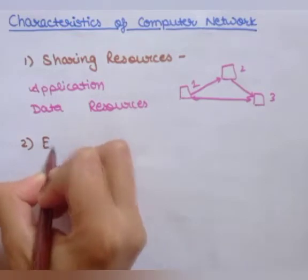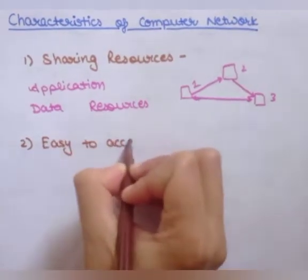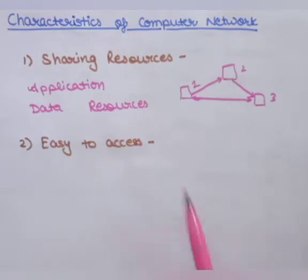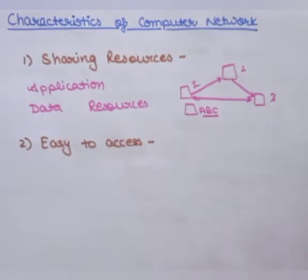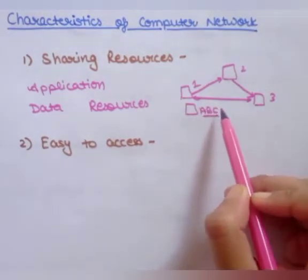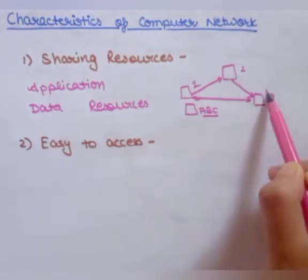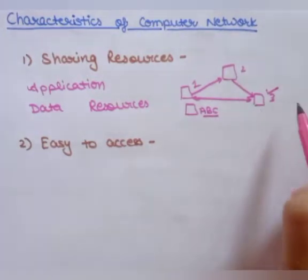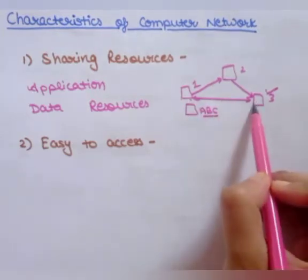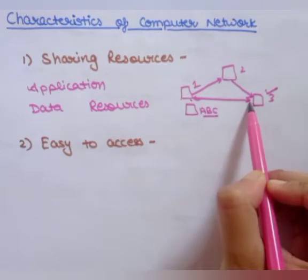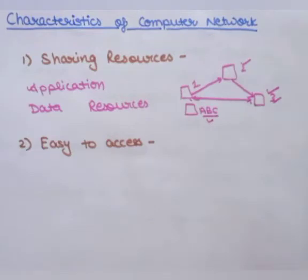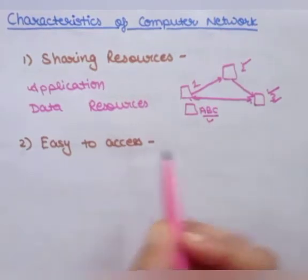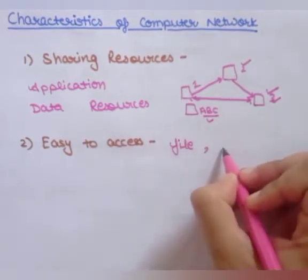The second characteristic is easy to access. If we are using computer networks then it becomes very easy to access any type of data. For example, consider if I have saved a folder in this computer — it becomes very easy to access this file from any of the systems. So it becomes very easy to access any type of file or any type of storage.